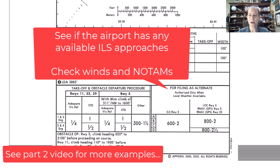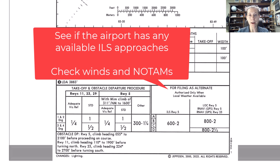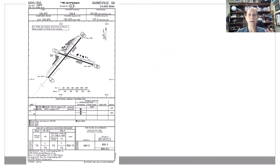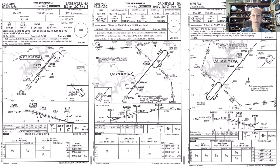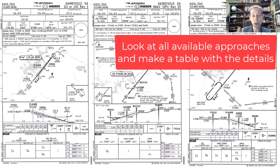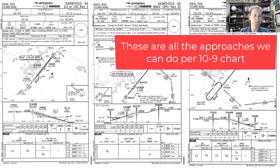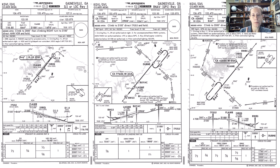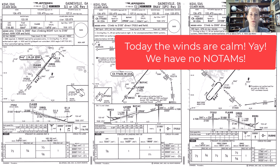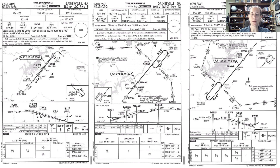This first example is the simplest. Gainesville, Georgia has an ILS going to runway five. Next, I'm going to pull up my approaches. I have the ILS to runway five and two different RNAV approaches. I'm going to consider my wind — in this example, we're going to pretend the wind is totally calm and that there are no NOTAMs for Gainesville, Georgia.